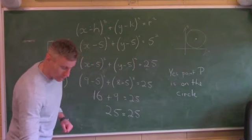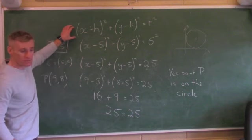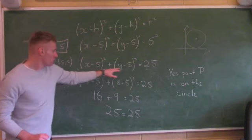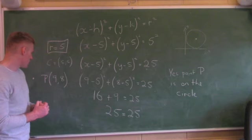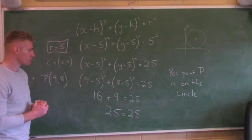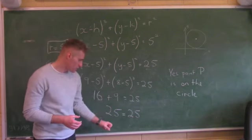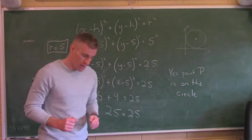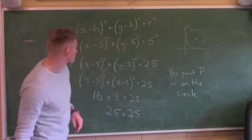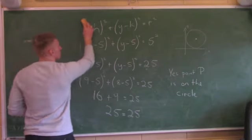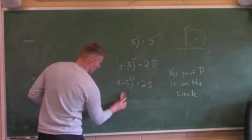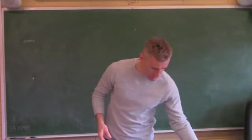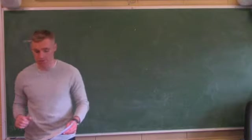Now I'm going to look at part B of this question — it's regularly asked. Find the equation of T, the tangent to C at P. First thing I ask myself: what is a tangent? A tangent is a line. So find the equation of a tangent means find the equation of a line. The formula I'll use from my log tables is y minus y1 equals m brackets x minus x1.